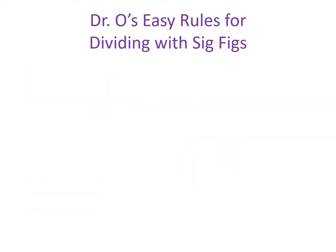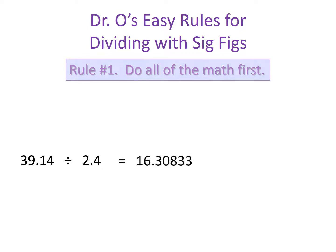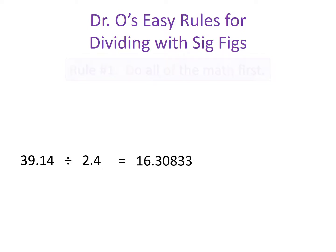What about dividing numbers? The good news is that the rules are exactly the same. Let's work a couple of problems. Here we have 39.14 divided by 2.14. Rule number one says do the math first — our quotient equals 16.30833. And with that, we're done with rule number one.